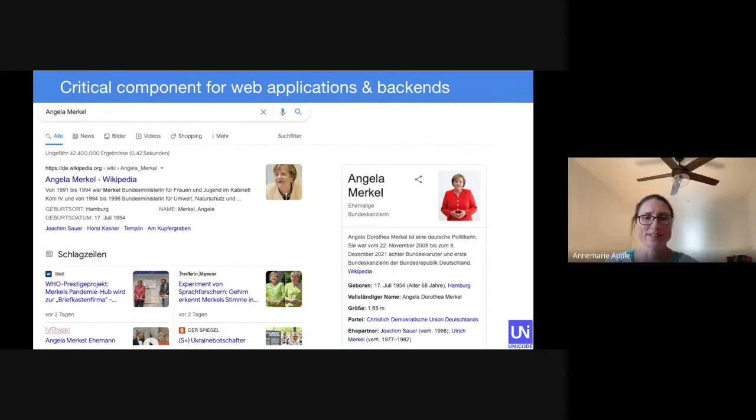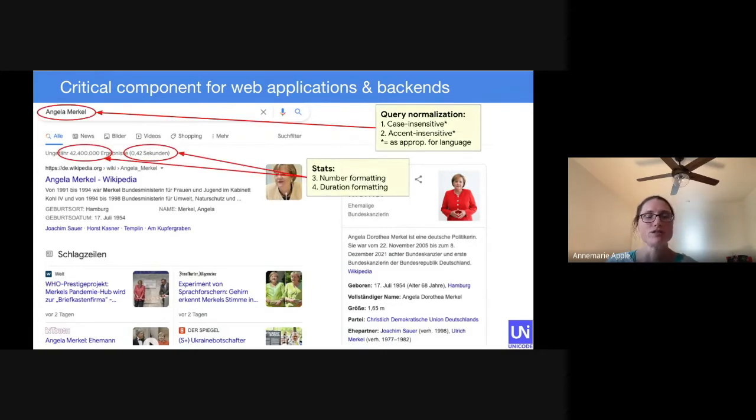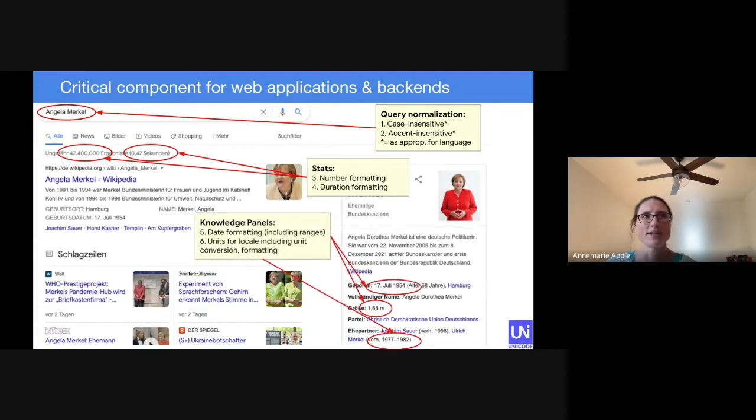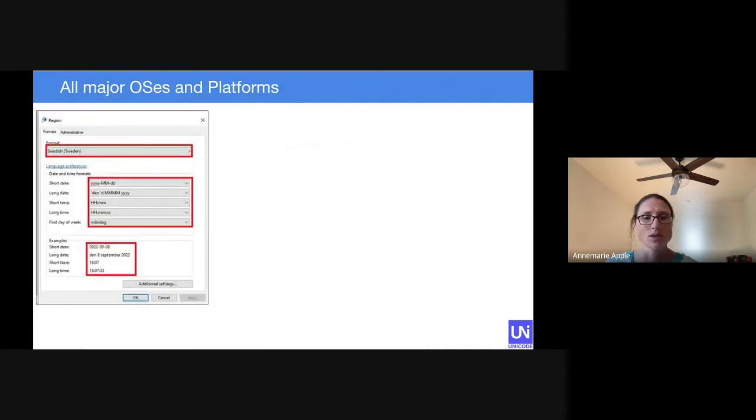So let's see how pervasive this data is if we take a look at a Google search page. Here we'll see examples of query normalization on the name, where the search query can be both case-insensitive and accent-insensitive, as appropriate for the language. Then if you look at the stats, there's number formatting and duration formatting. On the knowledge panels, there's date formatting, including the range here. Also units for locale, including unit conversion. Here it's in meters, but if you were doing this in American English, you would have feet and inches. Also another date range. One other example here is in the recency for results, you can see the relative time formatting two days ago. All of these are powered by CLDR.